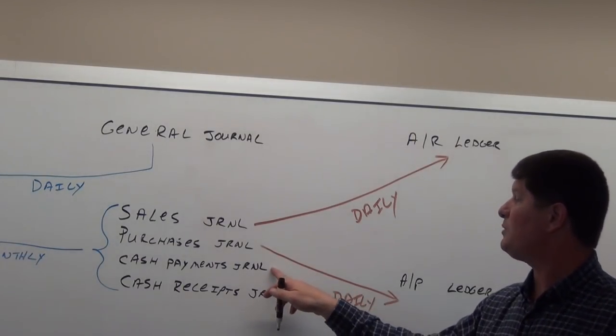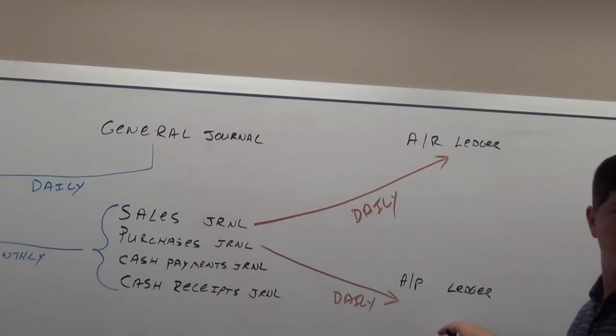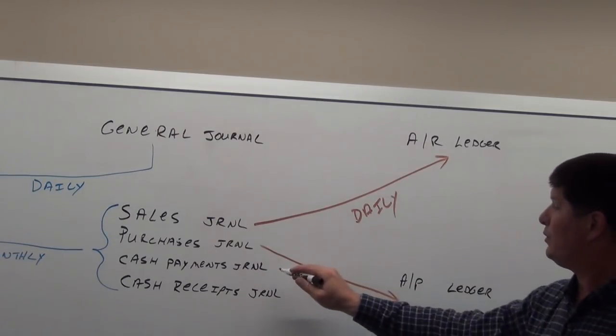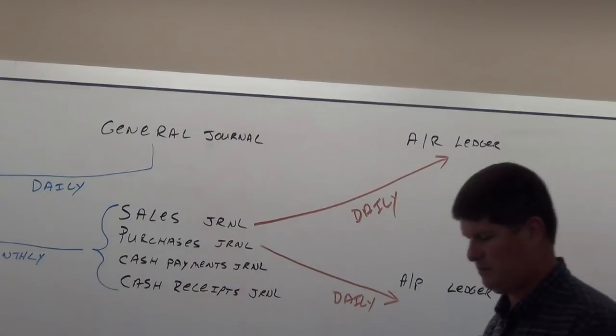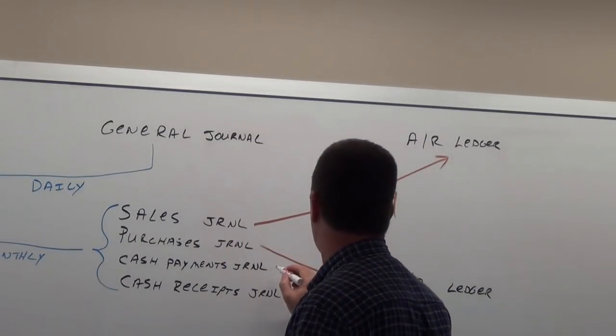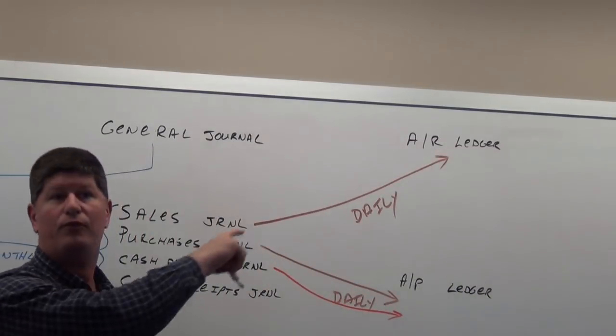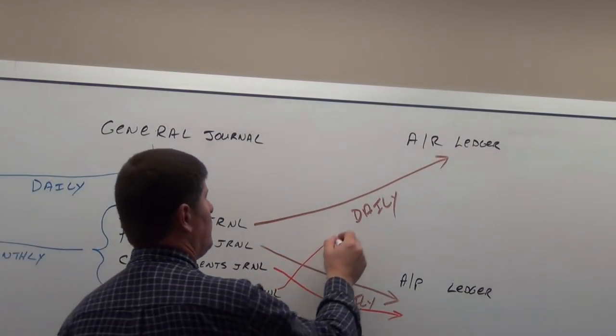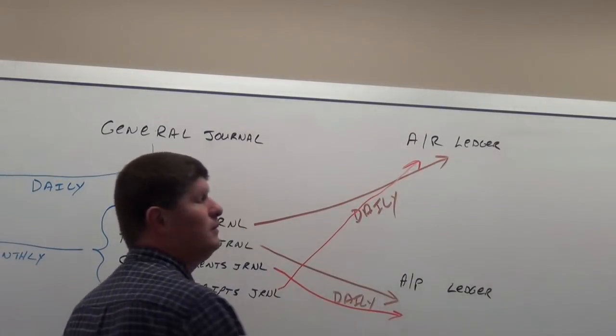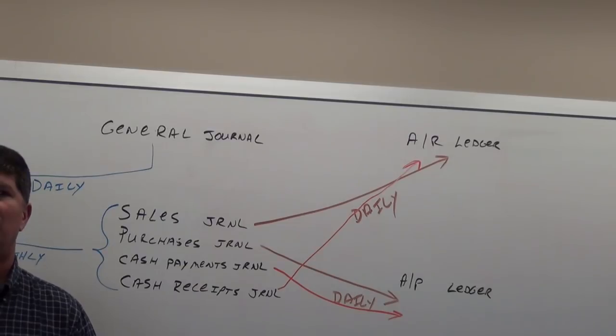And with the cash payments journal, you make a payment to your vendors that will reduce your balance, so you post those every day as well. Cash receipts - when your customers pay you, you want to post those every day as well so you know what their balance and accounts receivable is every day.